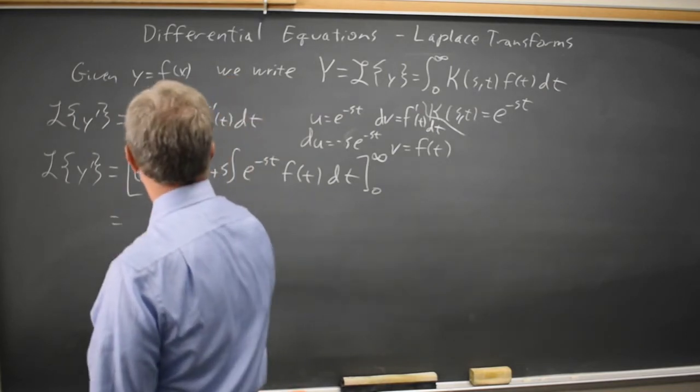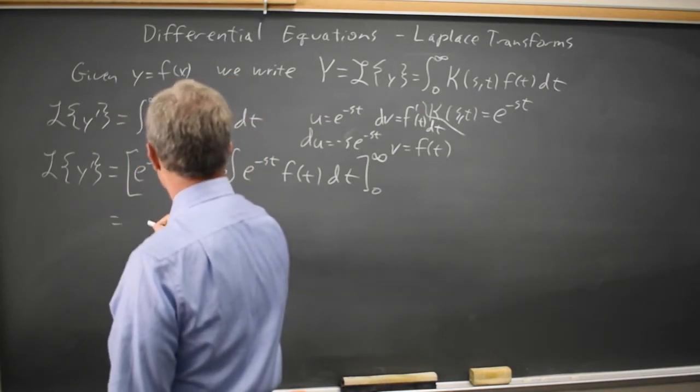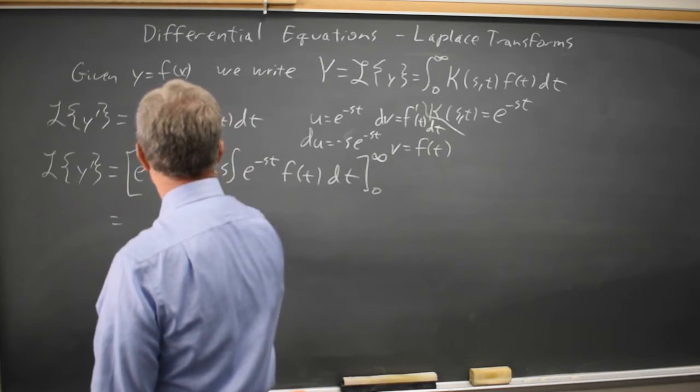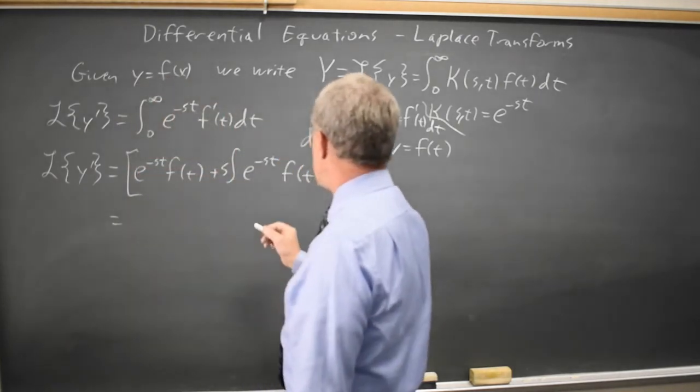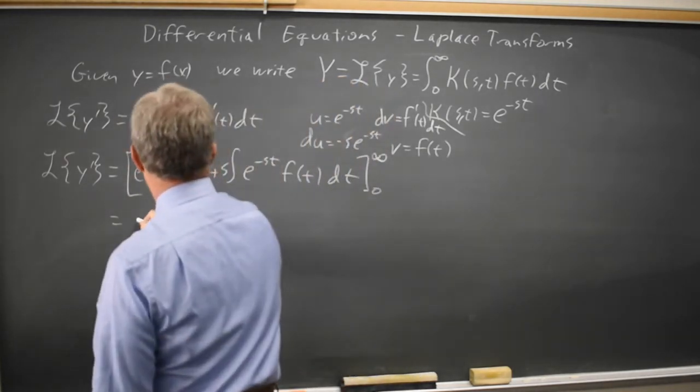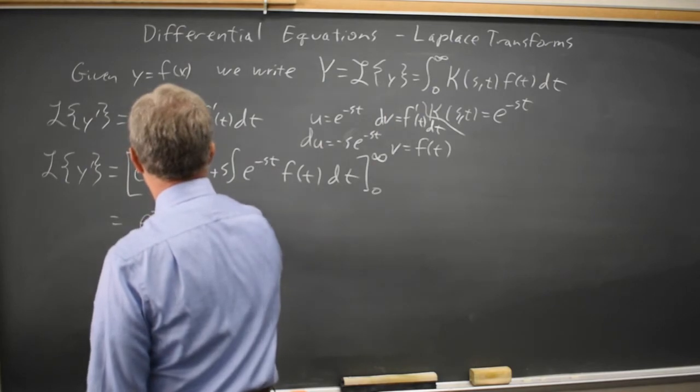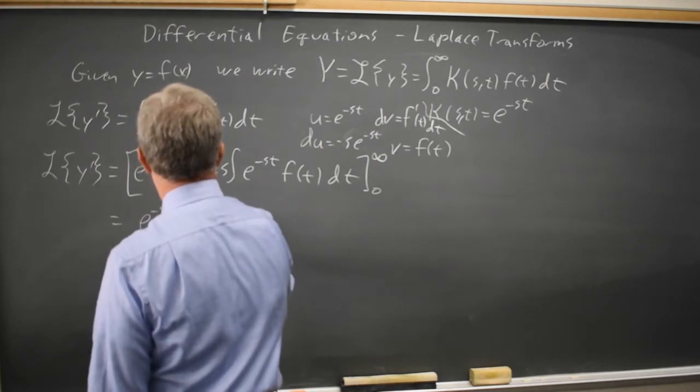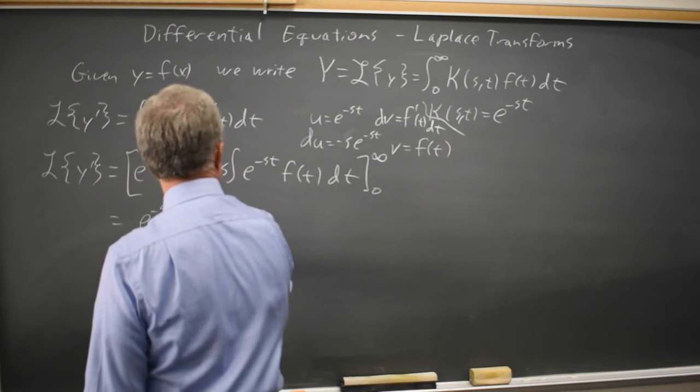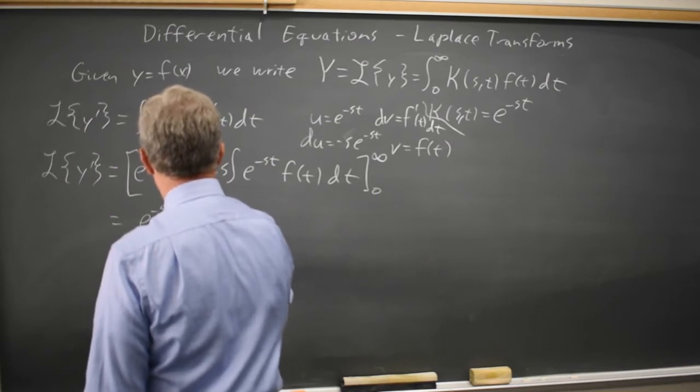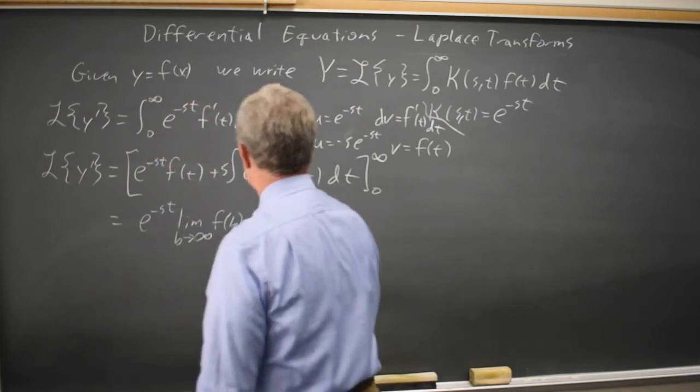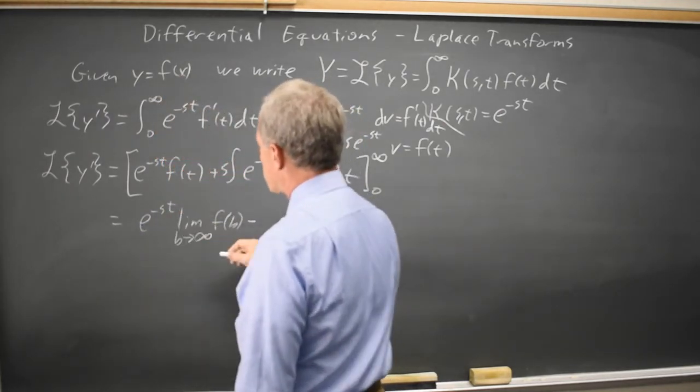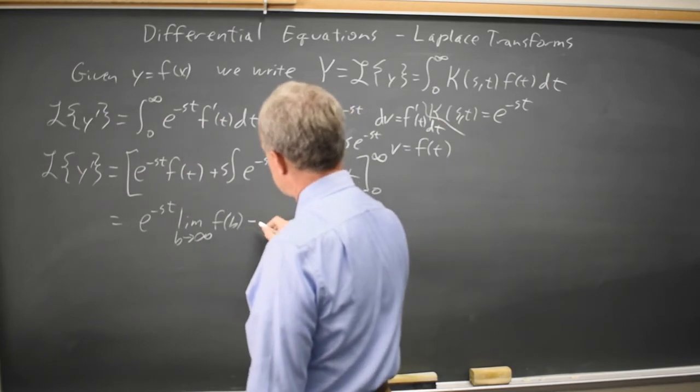And this is useful because this is e to the negative st, limit as b goes to infinity, f of t, minus e to the 0 is 1, times f of 0